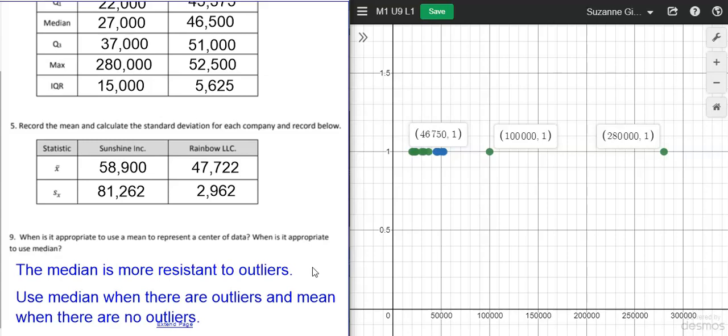This $280,000 number is way larger than any of the other values. So to answer the question, when is it appropriate to use the mean to represent a center of data, and when is it appropriate to use the median? The median is more resistant to outliers. So use the median when there are outliers, and then use the mean when there are no outliers. All right, that's it for this video. Thank you for watching.